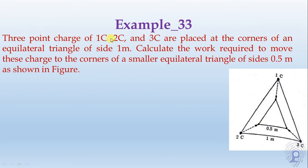Three point charges of 1 coulomb, 2 coulomb, and 3 coulomb are placed at the corners of an equilateral triangle of side 1 meter. Calculate the work required to move these charges to the corners of a smaller equilateral triangle of side 0.5 meters as shown in the figure.